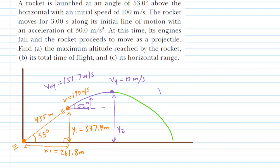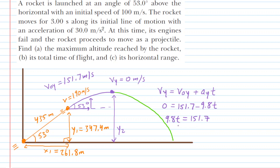We can figure out the flight time using the equation: final velocity in the y direction equals initial velocity in y plus acceleration in y times time. The final velocity is 0, the initial is 151.7 meters per second, and the acceleration in y is negative 9.8. Adding 9.8t to both sides and dividing by 9.8, we find that the time t2 is 15.5 seconds. So t1 for the orange segment was 3 seconds, and now we have t2 equal to 15.5 seconds.